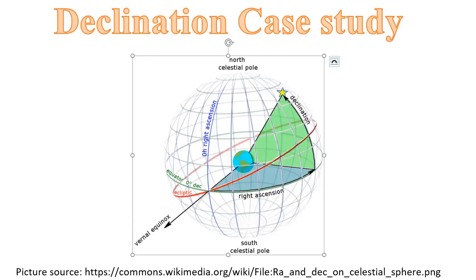Hello, declination case study. First, a little bit of astronomy - what declination is. Declination is about the equatorial system of coordinates, or the equatorial zodiac. Look at this picture - I got it from Wikipedia. This red plane is the ecliptic, showing how the Sun moves over the sky, and this green plane is the equator, related to Earth's rotation.